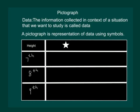She decides to use a star to depict that height of 10 students is above 5 feet. Then she marks one star in the 7th standard, which implies that only 10 students have the height above 5 feet in the seventh standard.